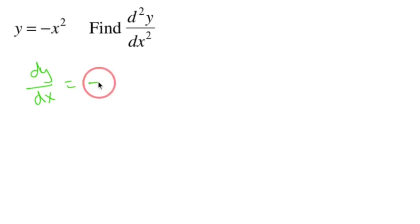So I would take, I'll keep the negative there, drop the two down, the two in front, keep x the way it is and subtract one from the exponent. So two minus one is one. That's sloppy. So negative two x.